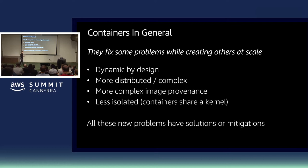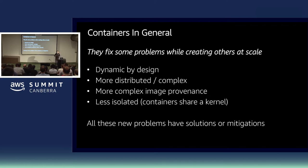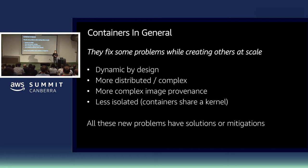Secondly, containers usually run in a very distributed and complex environment with several microservices and dependencies. Having the right identity and access management in place so a container can connect to the right AWS service or dependency is very important. Because of the layered approach for container images, a lot of people may have touched those images, and making sure there is nothing vulnerable in a container image is critical. Also, while namespaces provide good isolation, containers may share the same kernel, so patching that kernel is a very important task.